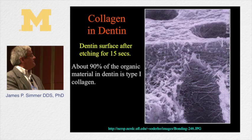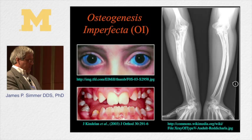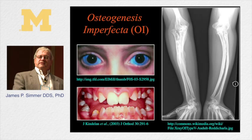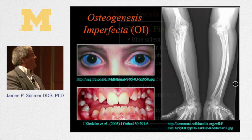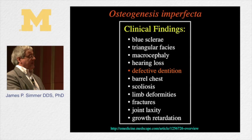Sometimes people with type 1 collagen mutations have a defect detectable only in the dentin, looking exactly like non-syndromic dentinogenesis imperfecta, but you'll find it's a type 1 collagen gene. Often there can be other symptoms — Dr. Hart already listed these — but sometimes defective dentition is the only symptom that's obvious clinically.